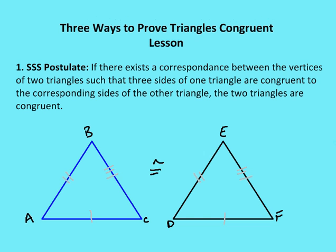Let's talk about the three ways. Number one, we have the SSS postulate — Side-Side-Side. It says if there exists a correspondence between the vertices of two triangles such that the three sides of one triangle are congruent to the corresponding sides of the other triangle, the two triangles are going to be congruent.